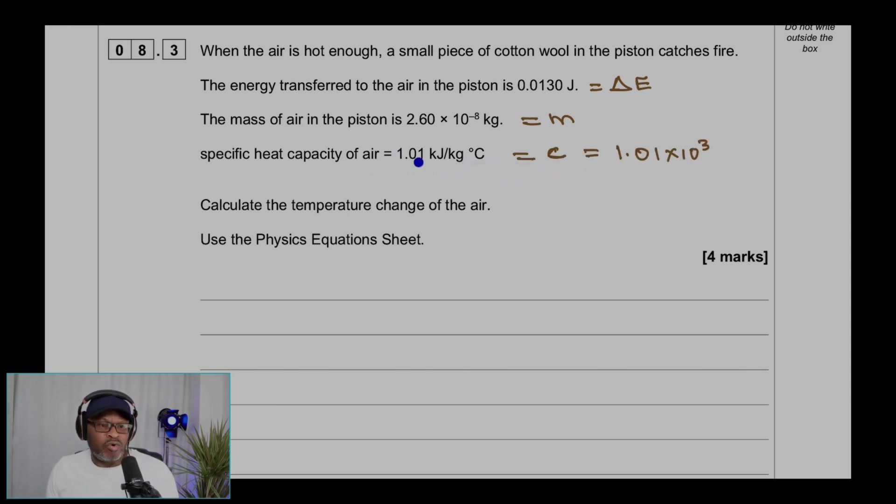That value is 1.01 kJ/kg/°C. We want to convert the kilojoules into joules. So K stands for 1000 or 10^3. So that'll be 1.01 × 10^3, which means you're multiplying by 1000, and that'll be 1010 J/kg/°C.